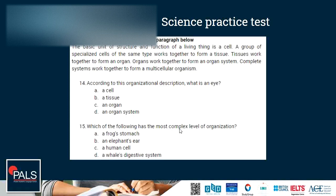Question 15: which of the following has the most complex level of organization? A frog's stomach, an elephant's ear, a human cell, or a whale's digestive system. A whale's digestive system is an organ system, which is the highest level of organization listed, so D is the correct answer.